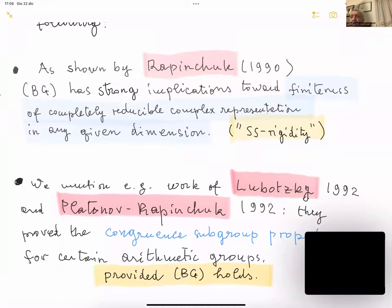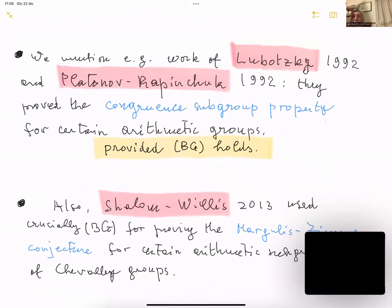This also has implications for the dimension of character varieties. Then there is work of Lubotzky-Platonov-Rapinchuk in 1992 — two series of independent works — proving that the congruence subgroup property, which is a famous series of problems regarding whether every finite-index subgroup of GL(n,ℤ) is a congruence subgroup, can be deduced from bounded generation in some cases.